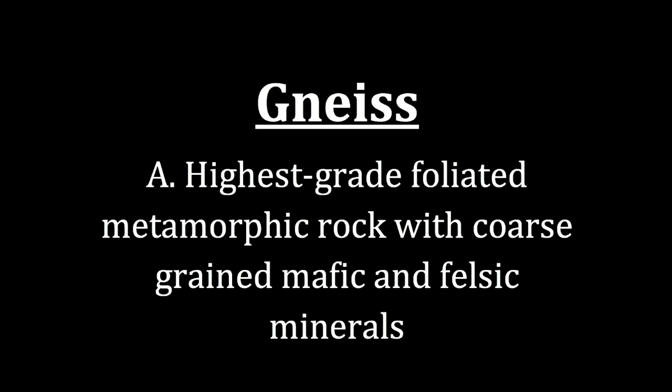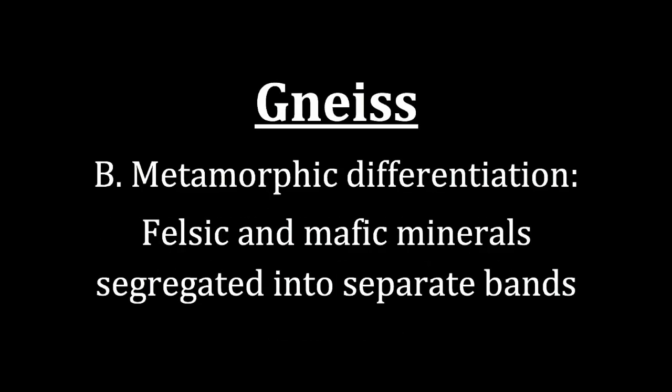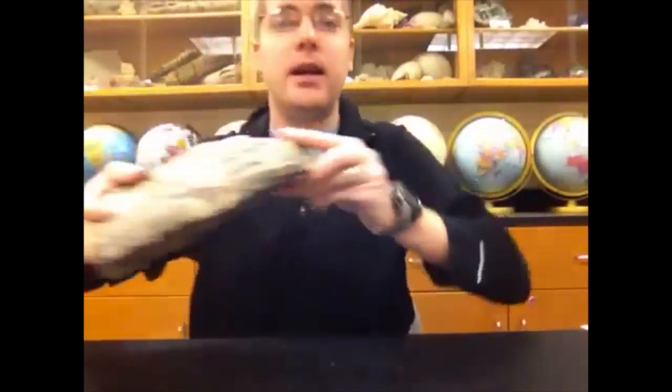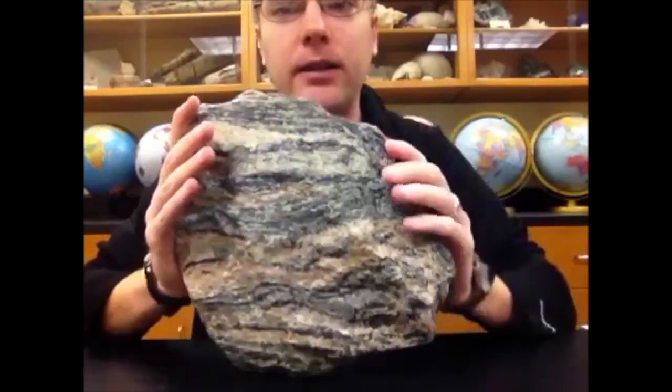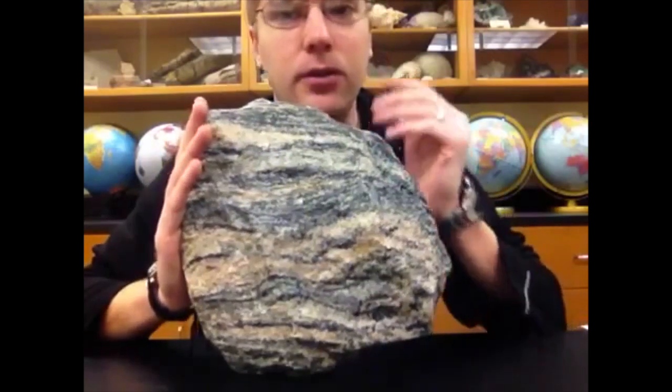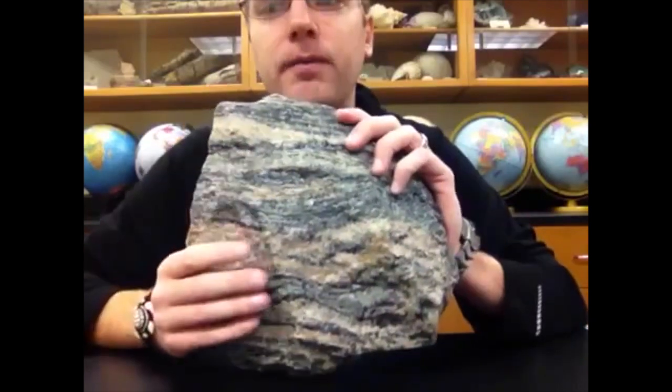The last of the foliated metamorphic rocks is gneiss — the highest foliated rock in terms of heat and pressure. When we look at gneiss, we see coarse-grained felsic and mafic minerals within the rock. Something that helps distinguish it is metamorphic differentiation, where felsic and mafic minerals are segregated into separate bands. Students often refer to this as tiger-striped, which is a good way to remember it.